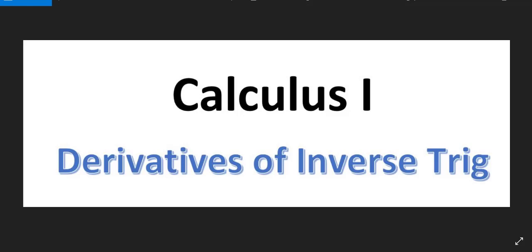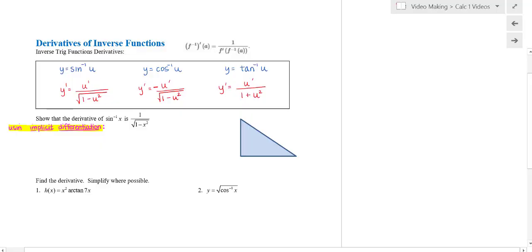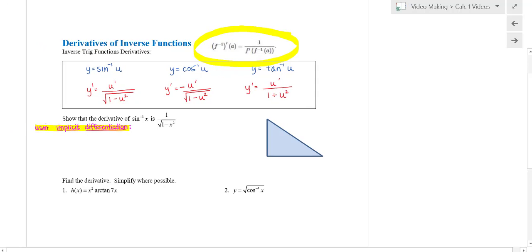Hi and welcome to a Calculus 1 video on the derivatives of inverse trig functions. Derivatives of inverse trig functions can be found by using the composite function property or by using implicit differentiation, which is how we're going to prove this here. We're focusing primarily on the three that I've written down below: inverse sine of u, inverse cosine of u, and inverse tangent of u as a function, and so I wrote out those derivatives below.